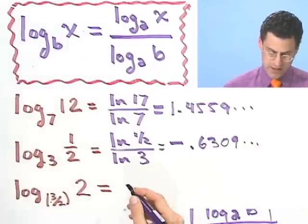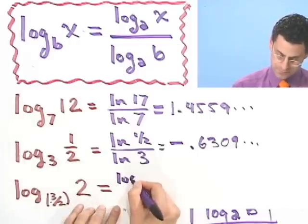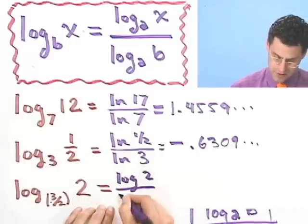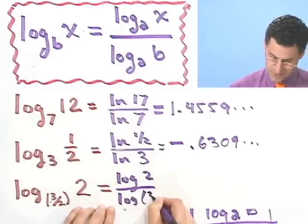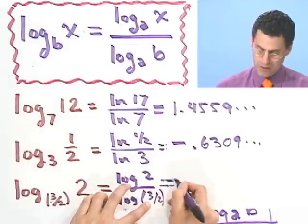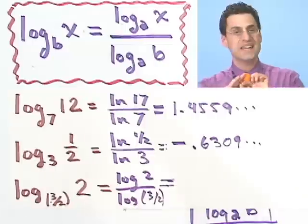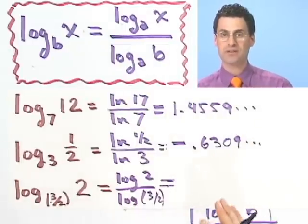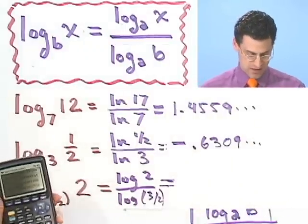Let's do one last one. And just for fun, I'll do this one in logs. Log base 2 over log base 3 halves. You might want to check, by the way, and try doing some of these ones that I did before using the log key. You'll get the exact same answer. It doesn't make a difference. So I'll use logs here now.